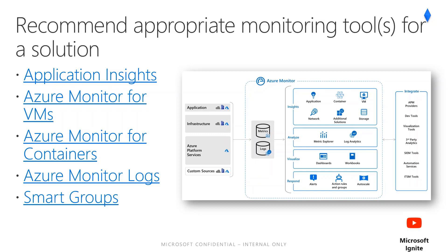Smart groups are automatically created by using machine learning algorithms to combine related alerts that represent a single issue. When an alert is created, the algorithm adds it to a new smart group or an existing smart group based on information such as historical patterns, similar properties, and similar structure. If you have a chance, check out the Microsoft Ignite session on Azure Monitor Fundamentals via the link at the lower right-hand corner of the slide.